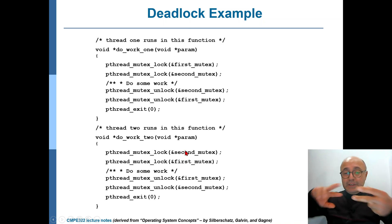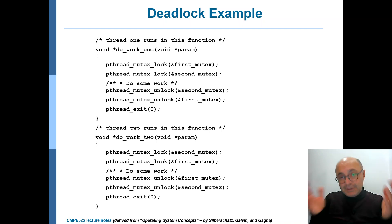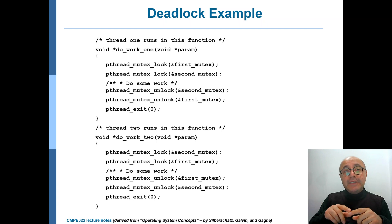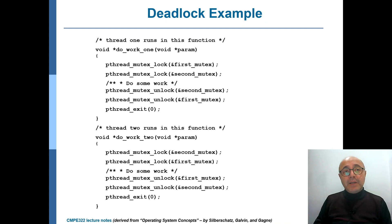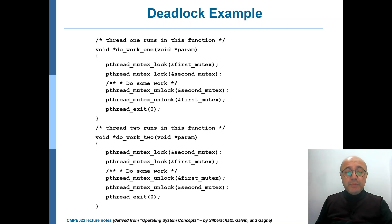There is a crisscross dependency between the two threads, so both will deadlock. In other words, even a single process can deadlock through its own threads. In a single-threaded application this is impossible, but with multiple threads it is possible, because threads behave just like separate processes.